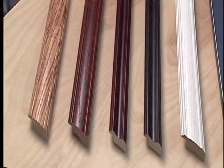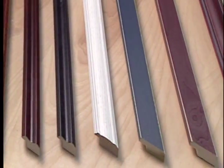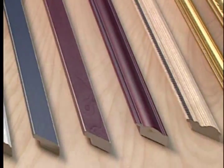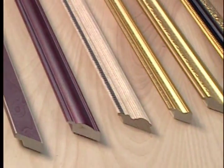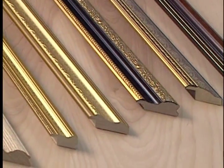Common molding styles include natural wood finish colors, black, white, various colors, and even unfinished versions that you can stain yourself. Another popular style of molding is gilded with gold or silver foil for that antique look.